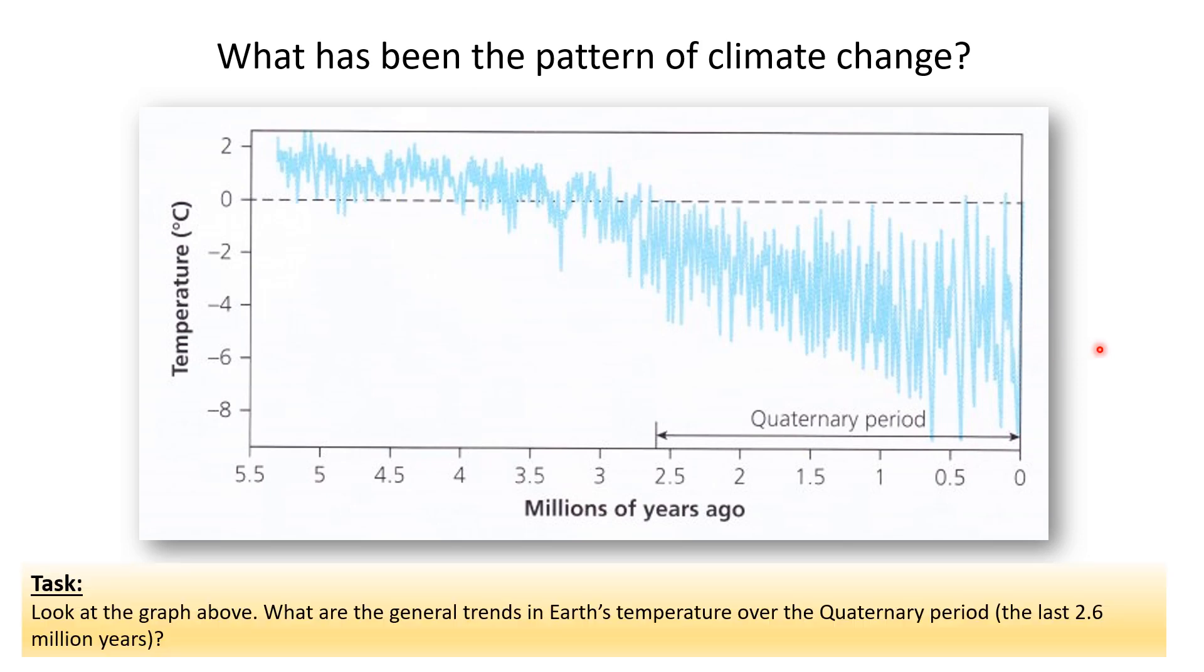So what are the trends this graph shows? The world has been getting colder over millions of years and the warm and cold periods have been getting more extreme. You'll notice here it says the quaternary period. All the quaternary period is, is just the last 2.6 million years, and that is the bit that the exam board are interested in.